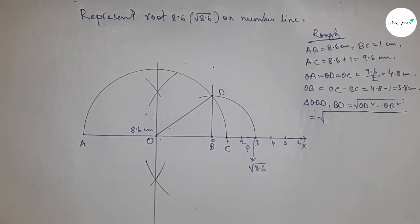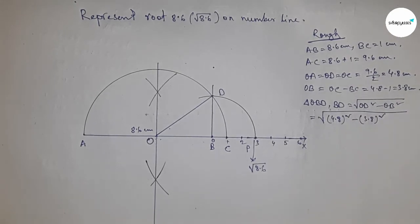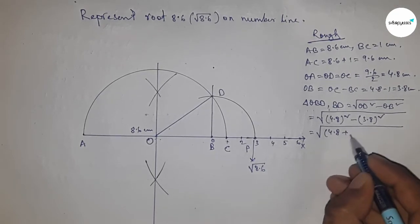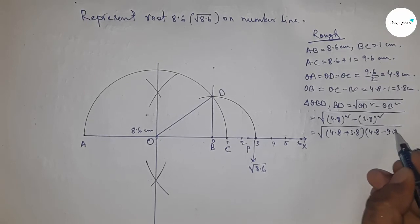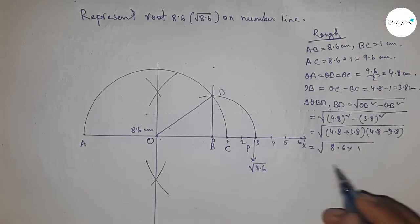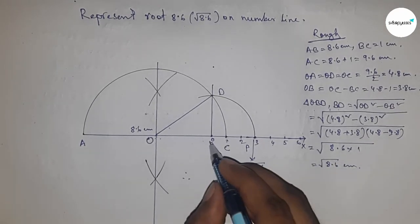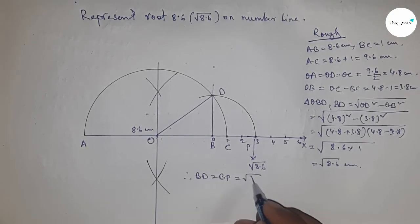I'm going to use the formula a squared minus b squared equals (a plus b) times (a minus b). Applying the formula here, we get 8.6. From this, BD equals root 8.6 centimeters. Therefore, distances BD and BP are equal, which equals root 8.6 centimeters.